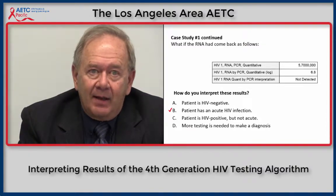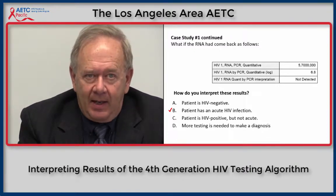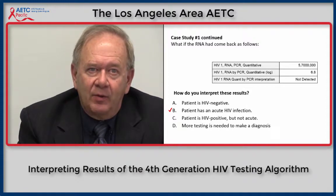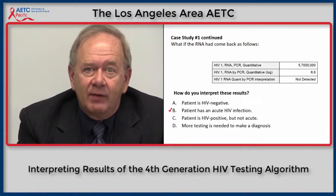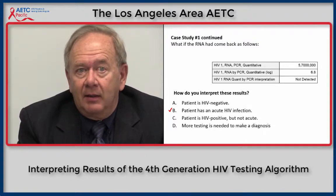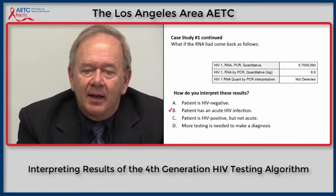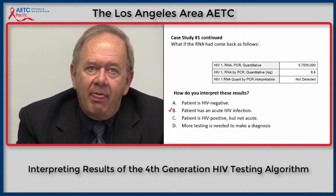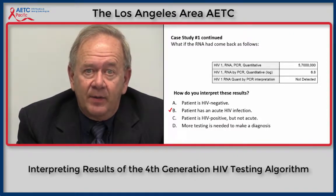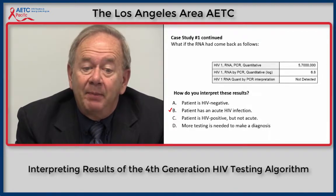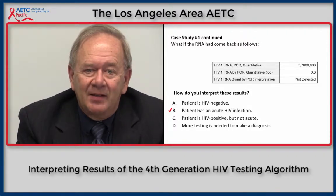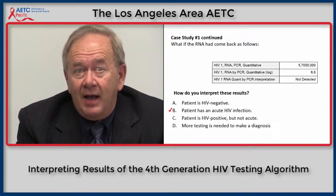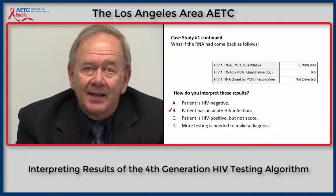Now we look at the same case one with a different HIV RNA result. The individual has a positive fourth-generation assay, a negative antibody test, and this time the quantitative PCR RNA comes back at 5,700,000 copies — equivalent to 6.8 log — with the interpretation of RNA detected. This sequence indicates B: the patient has acute HIV infection. A reactive fourth-generation assay, a negative antibody test, and a positive RNA test with a high viral load indicates the individual is at a very early stage of HIV infection, known as acute HIV infection.